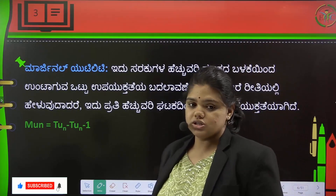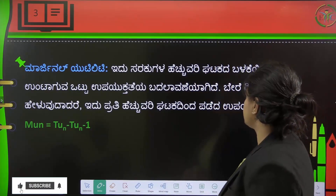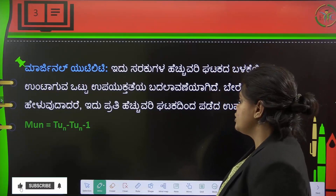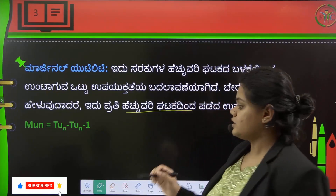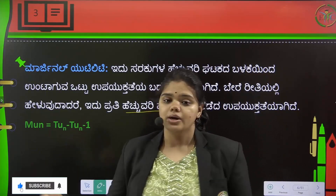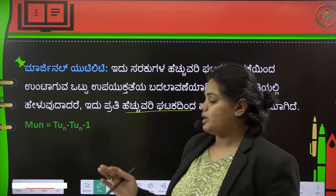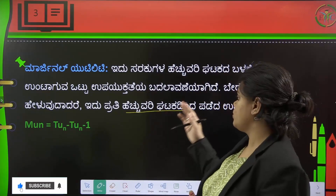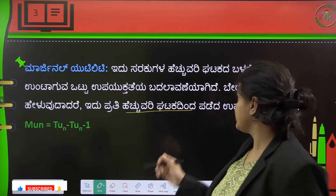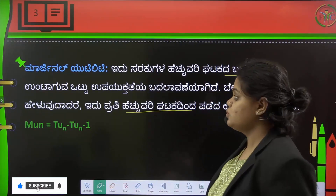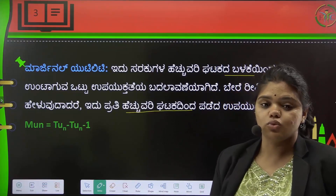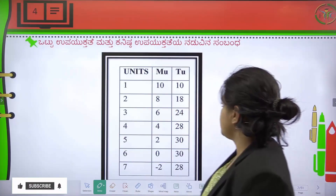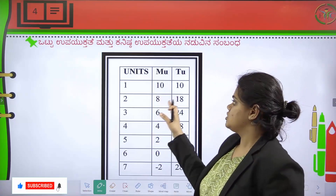Marginal Utility. Marginal utility means exactly where, when you consume one good, the additional units you take — marginal utility means the additional utility from additional units. The relationship between total utility and minimum utility — that is marginal utility.